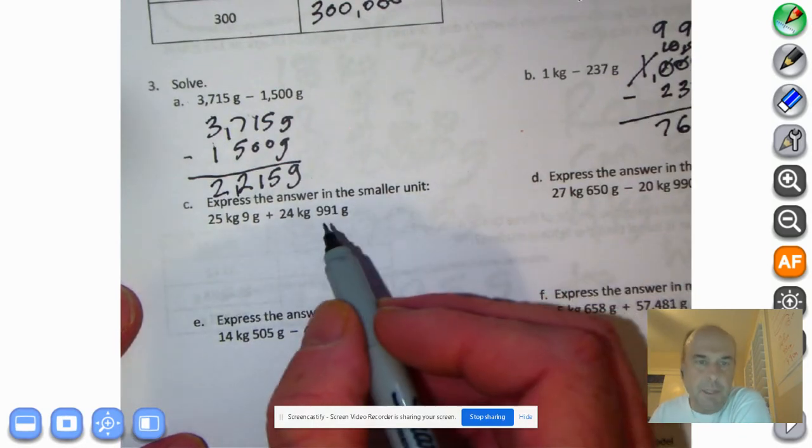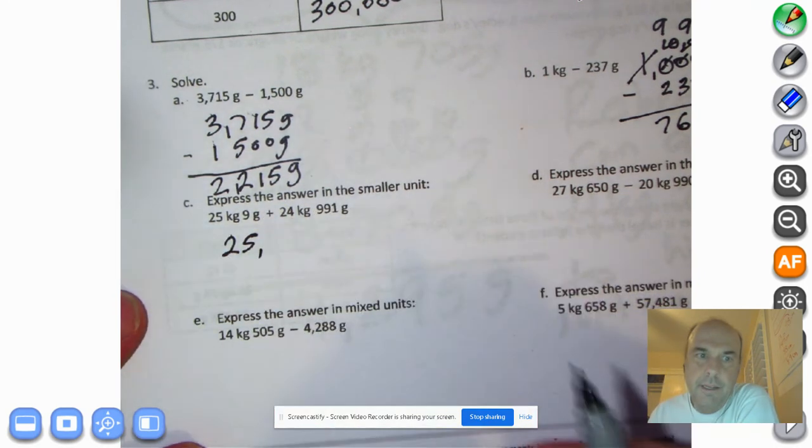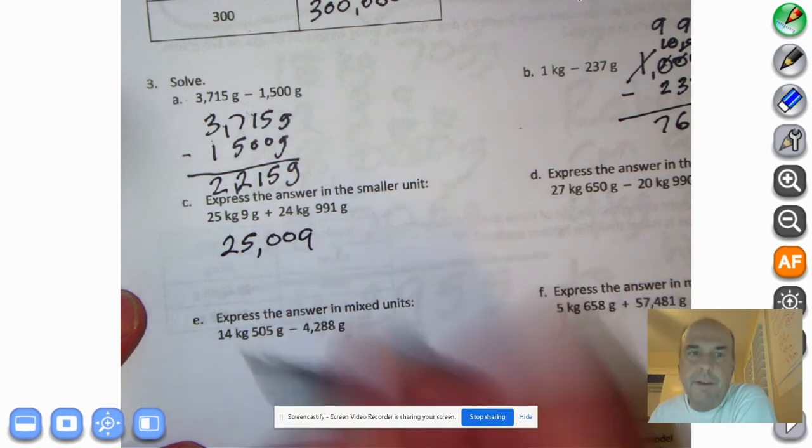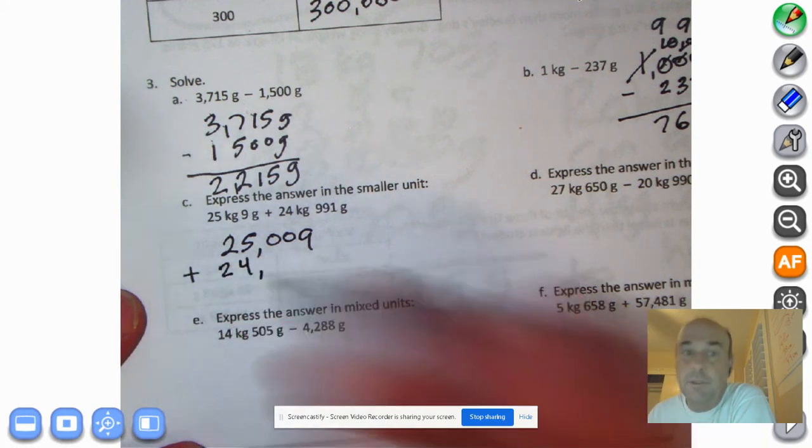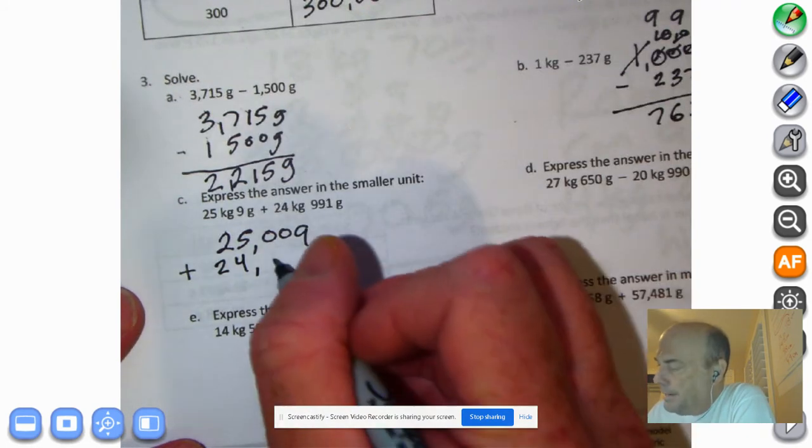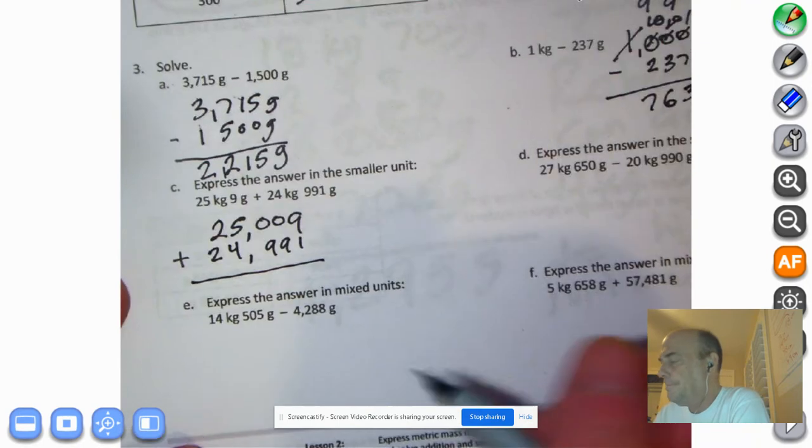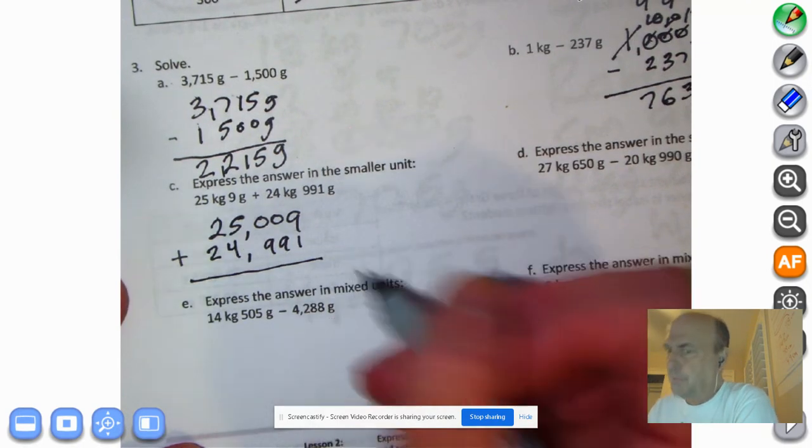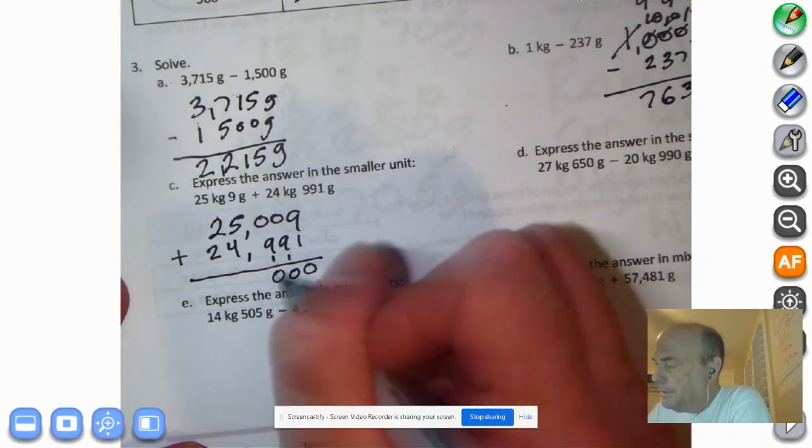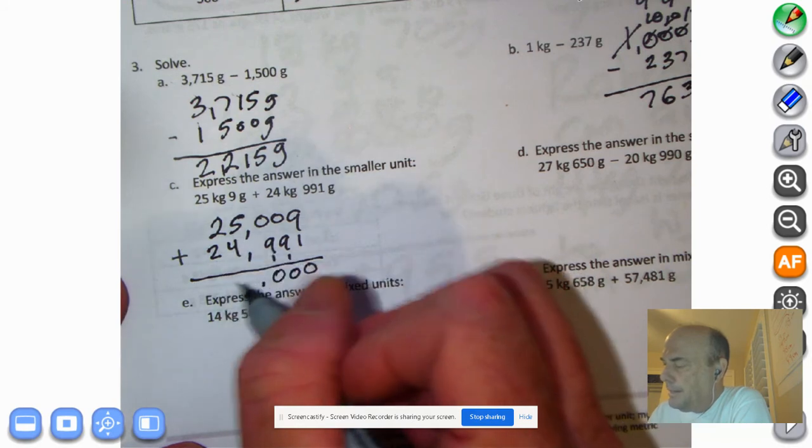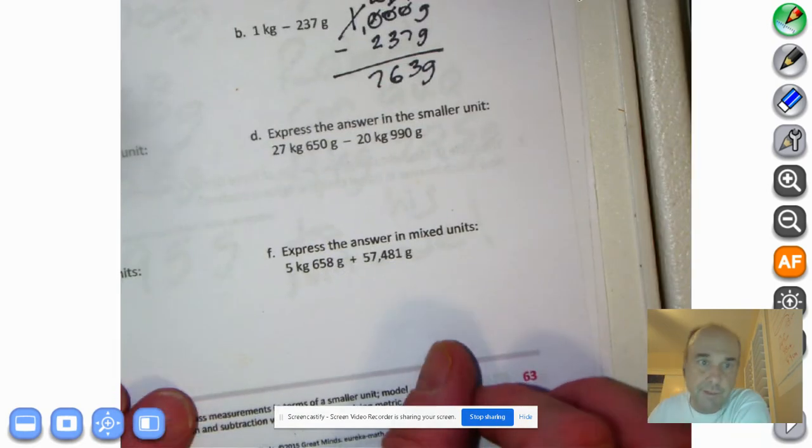All right, express the answer in smaller units. Well, a smaller unit is grams, right? So we're going to go 25,000, right? 0, 0, 9. That's 25 kilograms, 9 grams. And we're adding 24 kilograms, which is 24,000 grams, 991. And go ahead and pause the recording so you can figure this out. And I welcome you back to the problem set. 9 plus 1 is 10. 9 plus 1 is 10. 9 plus 1 is 10. How about that? 5 plus 4, 9. And 2 plus 2 is 4. 49,000 grams. That's a lot of paperclips. Or dollar bills. Even better yet.